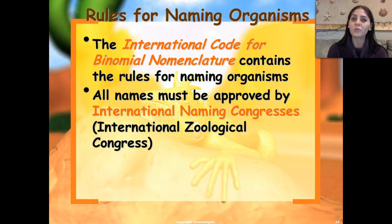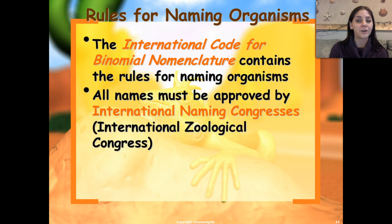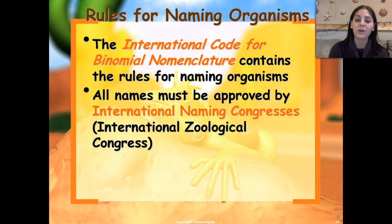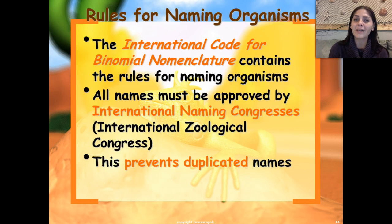So there are rules — yes, rules — for naming organisms. The international code for binomial nomenclature contains the rules for naming organisms. All names must be approved by the international naming congresses, the international zoological congress. Yes folks, there is actually a job where you sit around all day in an international naming congress and make sure that no one has duplicated the name of an organism.